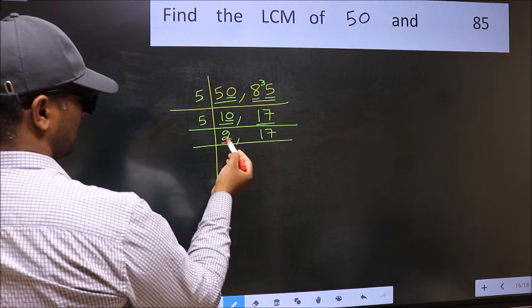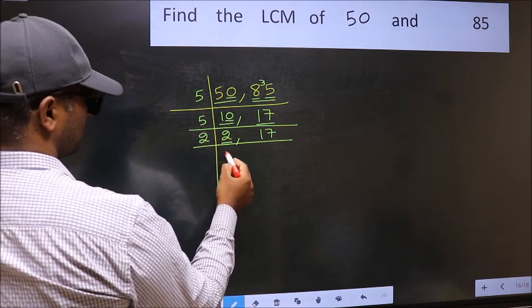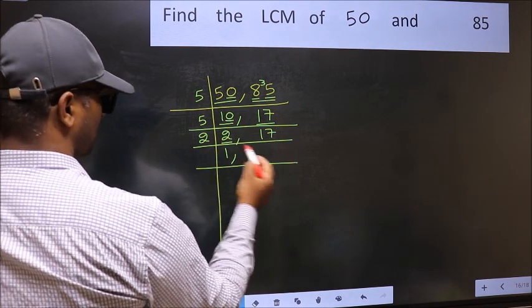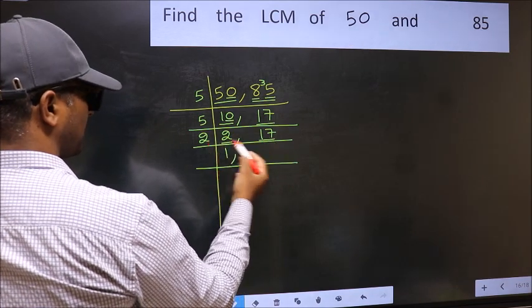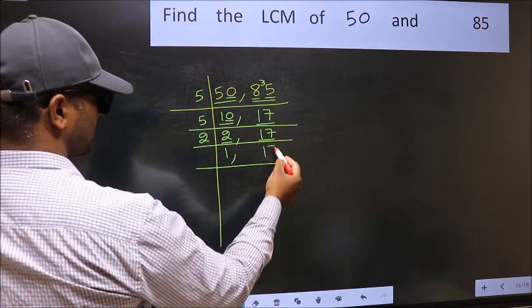Now here we have 2. 2 is a prime number, so 2 once is 2. The other number is 17, not divisible by 2, so you write it down as it is.